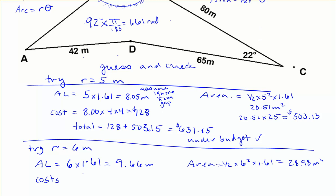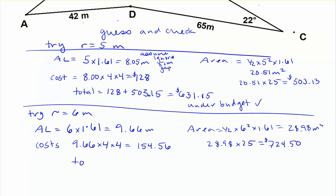Looking at our costs again, just use the whole number here. 9.66 times 4 per meter times 4 for each one. And we get $154.56. And over here, the cost is going to be 28.98 times 25, which gives us $724.50. And if we add that up for our total cost, 154.56 plus 724.50,